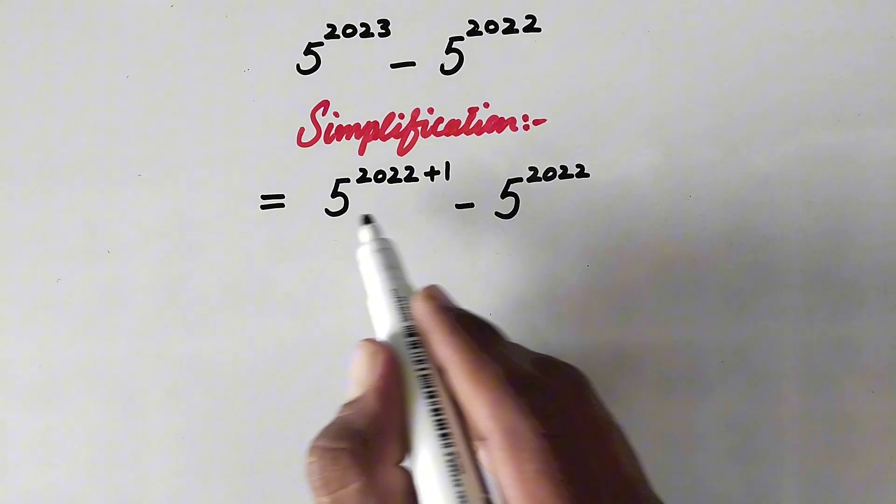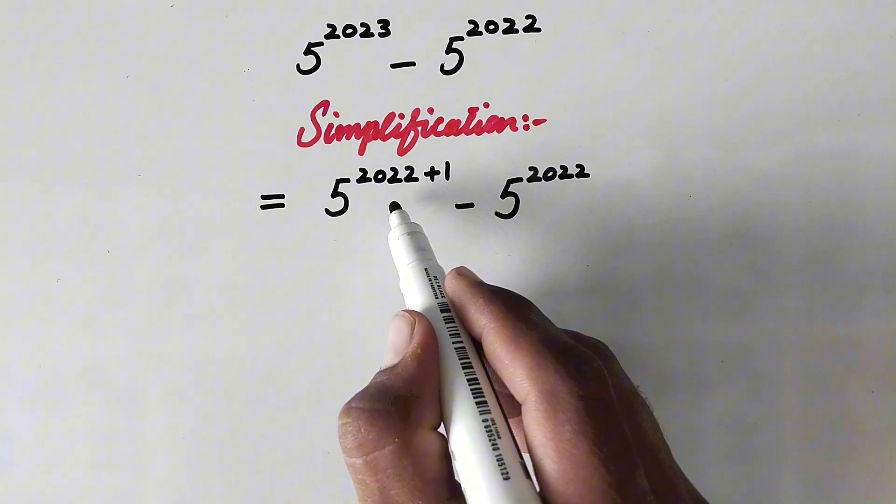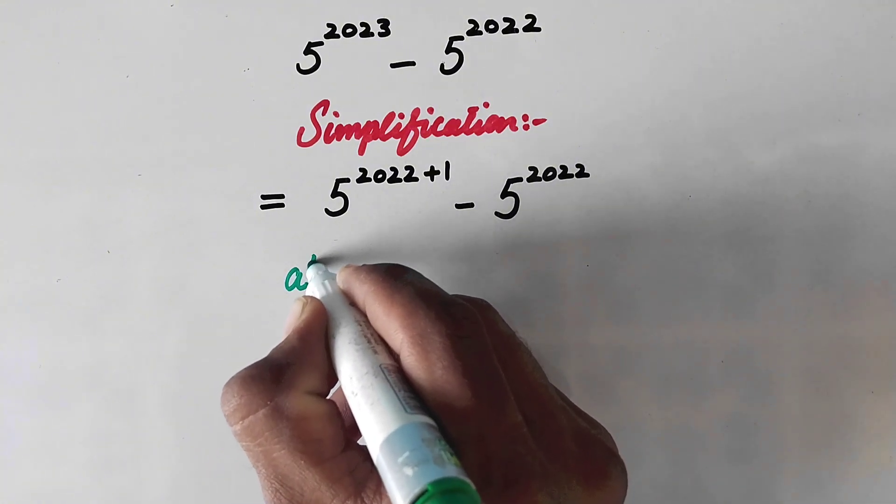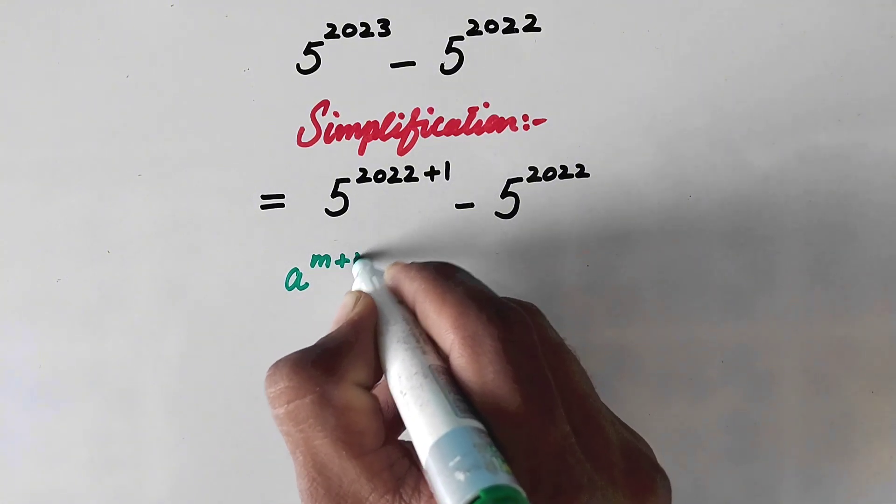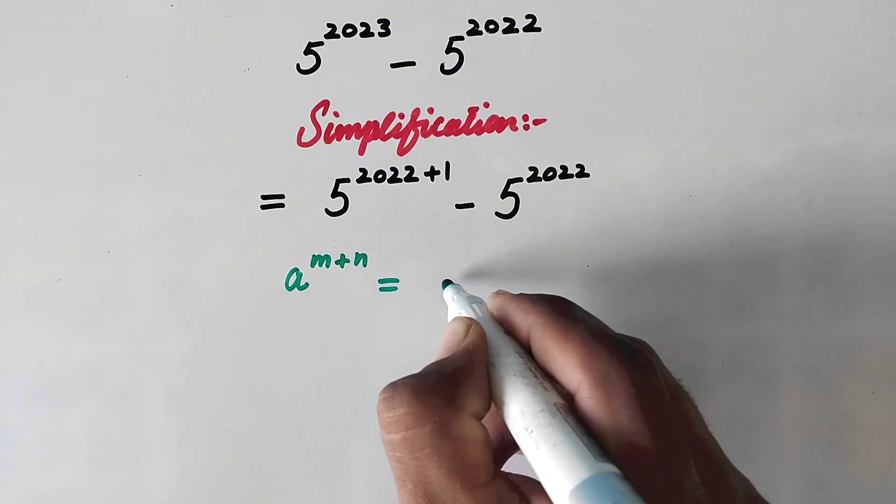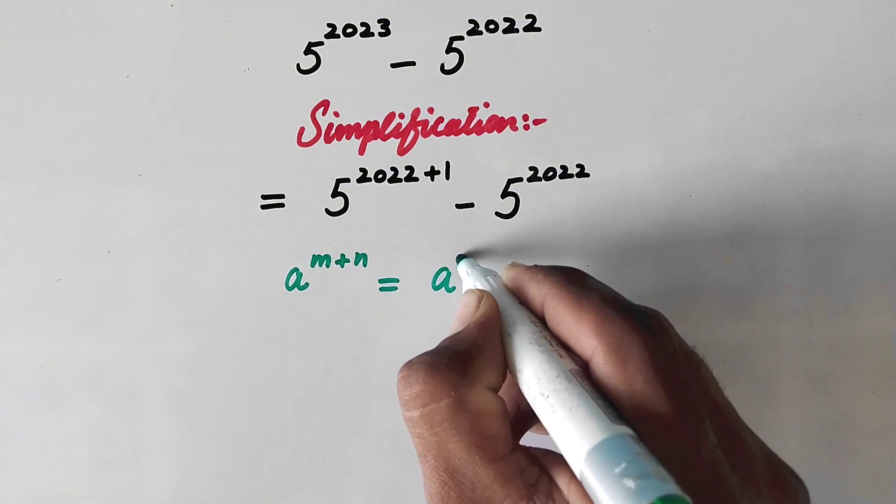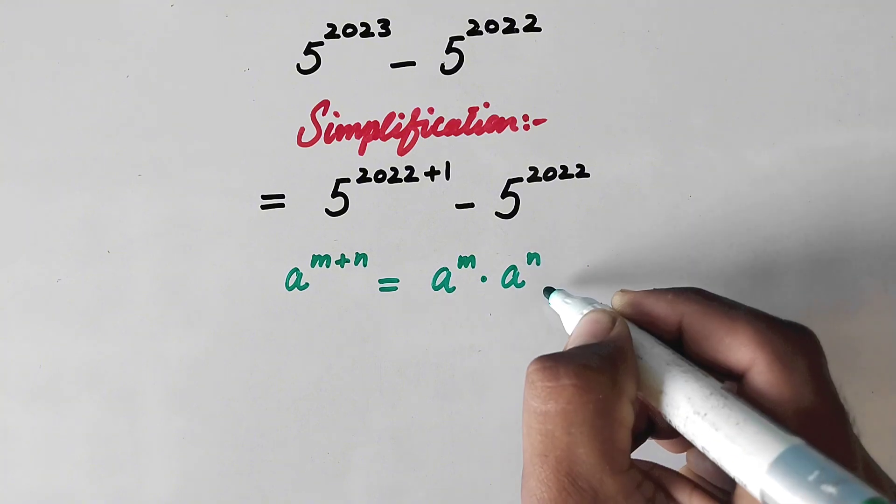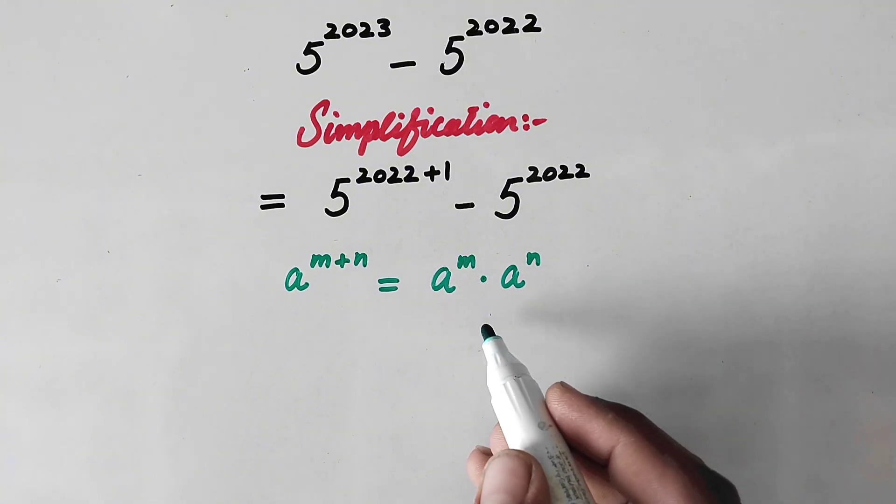So now here in next step we will follow a property of exponents that is a raised power m plus n is equal to a raised power m times a raised power n. So by following this property,